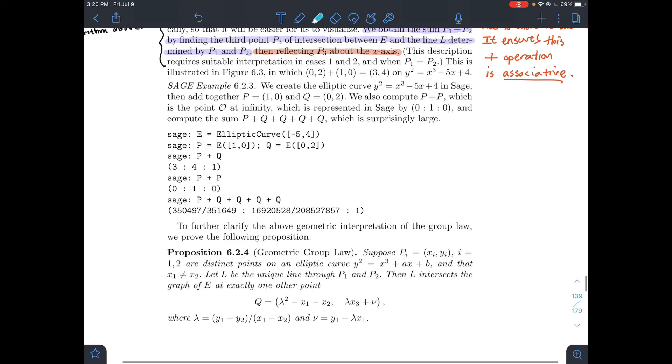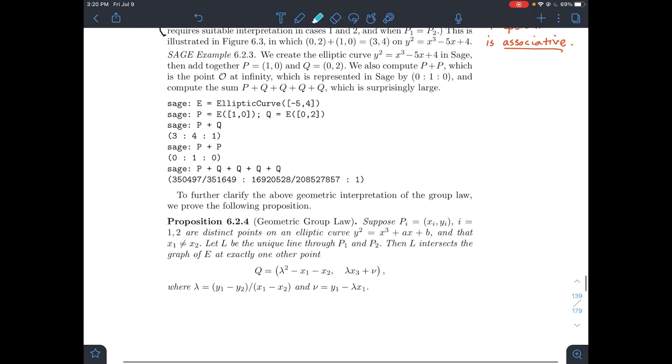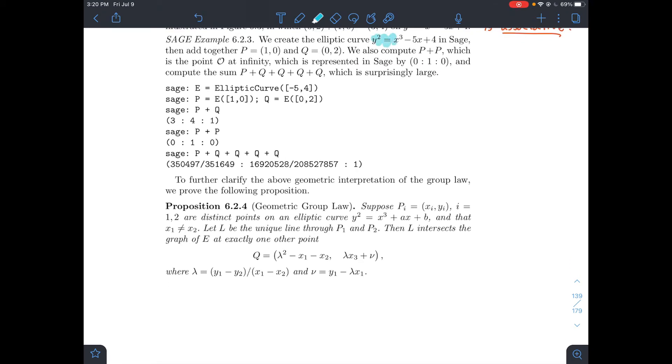So what we will do is we will skip down to some of this SAGE work here. And we're going to plot the curve y squared equals x cubed minus 5x plus 4. And what we want to do is add the points 1,0 plus 0,2. And just for fun, we'll also look at what's p plus p. So how do you add a point to itself?